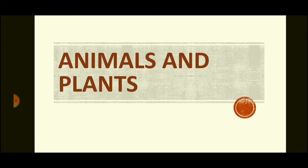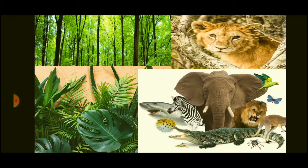First difference: animals move about from place to place but plants are fixed to the ground. Animals move from one place to the other.